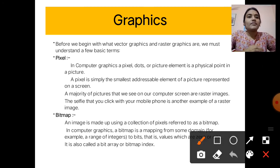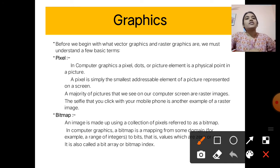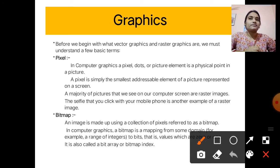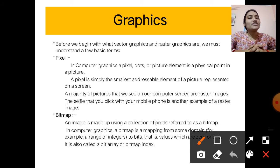In computer graphics, a pixel means dots or picture element — it is a physical point in a picture. A pixel is simply the smallest addressable element of a picture represented on a screen. A majority of pictures we see on our computer screen are raster images. For example, all of you have a mobile phone and take selfies.